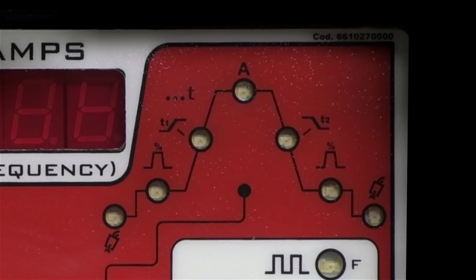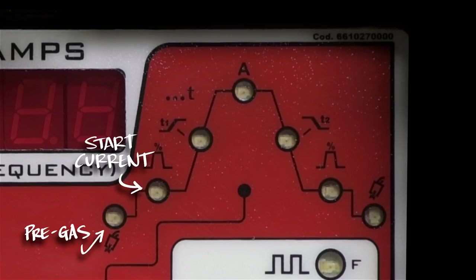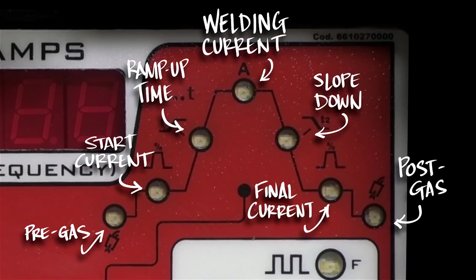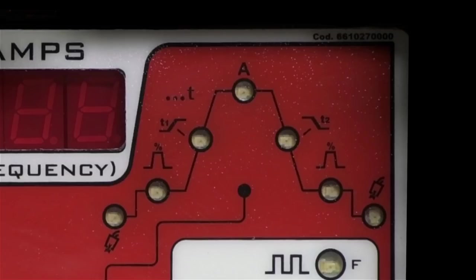So starting from the left, it's how much pre-gas you'll get, the start current, the current ramp up time, up through to the actual welding current itself. Right there is probably where you spend most of your time. Then the slope down time, the final current, and then your post-gas time. At that point your arc would be off. Everything the welder does between when you start welding and when you stop. I guess shy of holding the torch and filler rod for you. If you need your welder to do that, you'll have to buy a robot.